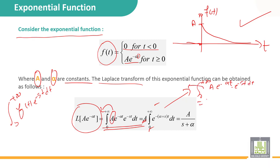A is constant, equal to A times the integral from 0 to plus infinity of e^(-αt) multiplied by e^(-st) dt, equal to e^(-(α+s)t) dt.